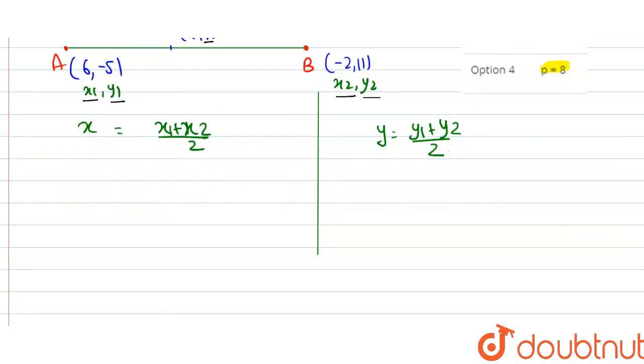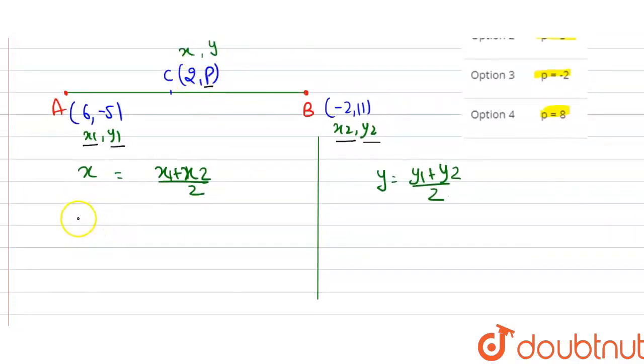So here we verify the x-coordinate. We have x1 is 6 and x2 is -2. So 6 minus 2 divided by 2. The value is 4 divided by 2, which equals 2. So the x-coordinate is 2, which matches the midpoint given.